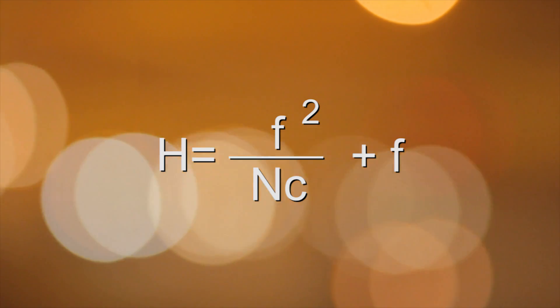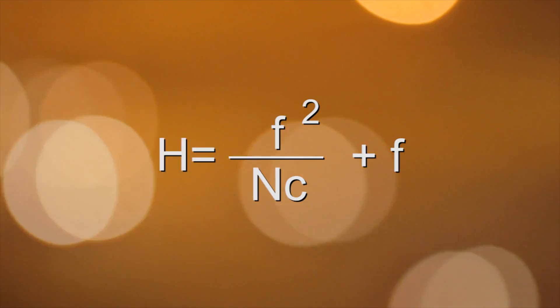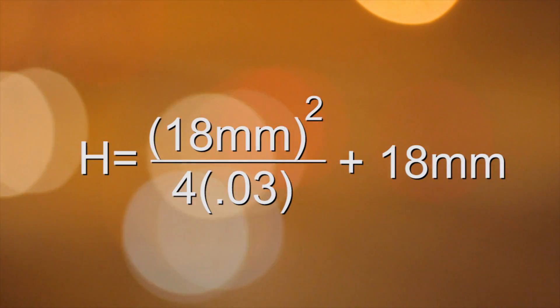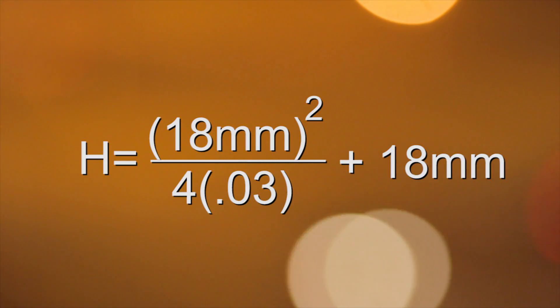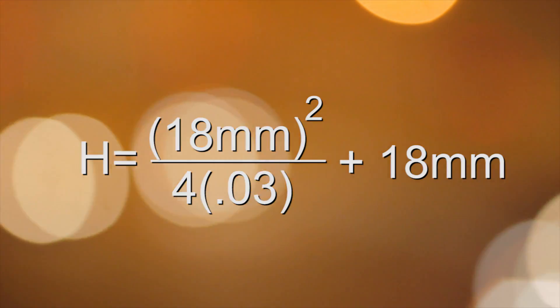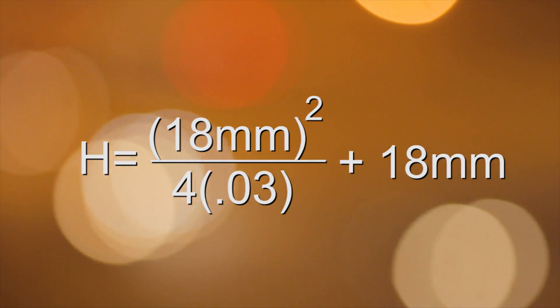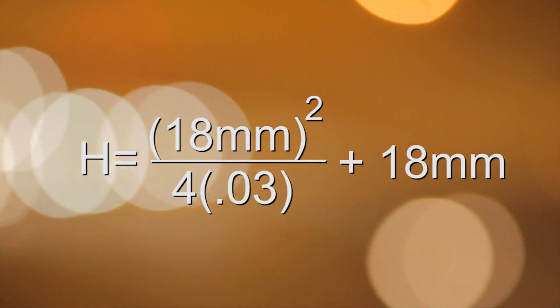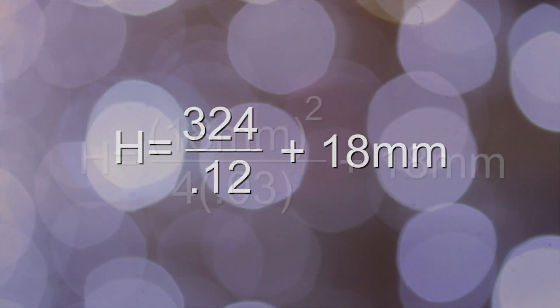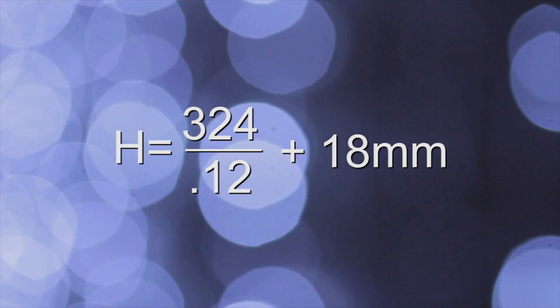Alright, now that we know our equations we can start plugging in variables. For our lens focal length we're going to go with a really wide angle lens like an 18mm. We're going to set our aperture or F number to an F4. I'm going to be making my calculations of depth of field based off of a Canon 5D Mark II camera. Now the circle of confusion for that is a 0.03mm circle. Now that we have all of our variables plugged in, all we have to do is solve for H.